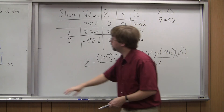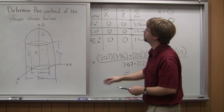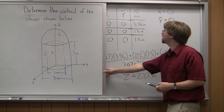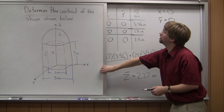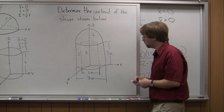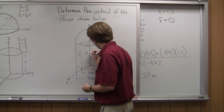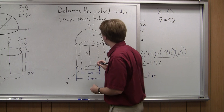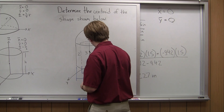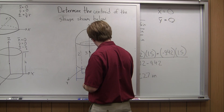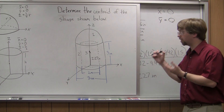My original units were all in inches, so the units here are inches as well. So what does that mean? I've got x̄ equals zero, ȳ equals zero, z̄ is 2.27. The centroid of this shape is going to be at x equals zero, y equals zero, z equals 2.27 — meaning I go up 2.27 inches in the z direction. With that, I've located my centroid point and I've solved my problem.